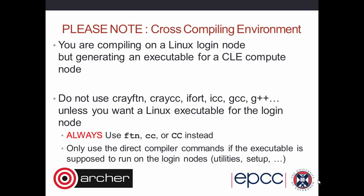One important note: the login nodes have a different version of Linux from the backend compute nodes. The login nodes have full Linux, and the backend nodes have a stripped-down Cray Linux Environment. The compiler wrappers assume you're compiling for the compute nodes. If you called the actual compilers directly — crayftn, icc, or g++ — without the wrapper magic flags, you'd get a Linux executable for the login node, which isn't guaranteed to run on the more stripped-down compute nodes. So you should always use 'ftn', 'cc', or 'CC'. The only time you use direct compiler commands is if you really want the executable to run on the login nodes, such as for a small utility program.